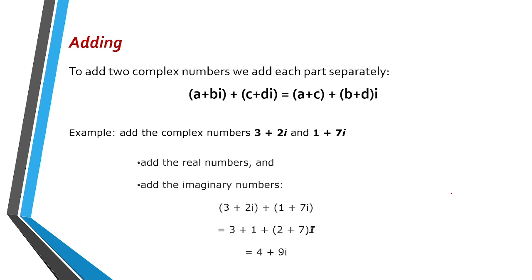Okay, so let us continue with the discussion of complex numbers. In adding complex numbers, to add two complex numbers we add each part separately. We have an example: (a+bi) plus (c+di). So add the real numbers first, in this case a plus c, then plus (b+d)i. So group the real numbers, group the complex numbers, then proceed with the addition.